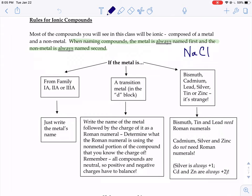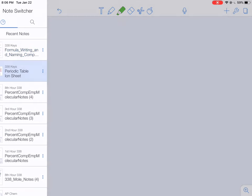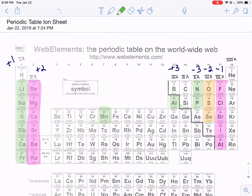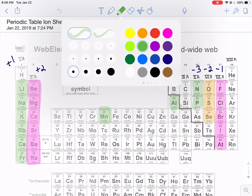The last part over here, these five: bismuth, cadmium, lead, silver, tin, or zinc. It's a little bit of a strange situation with this handful of elements. When you look at bismuth, tin, and lead, they need Roman numerals. But when you find their location, bismuth, tin, and lead on the periodic table...